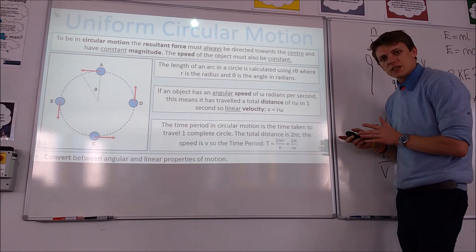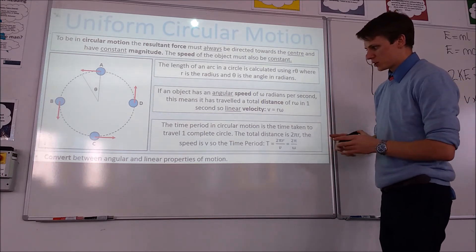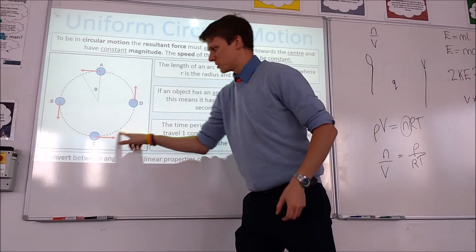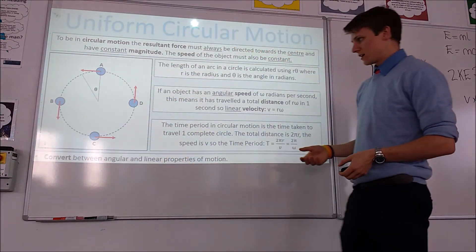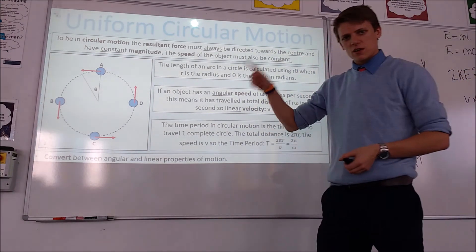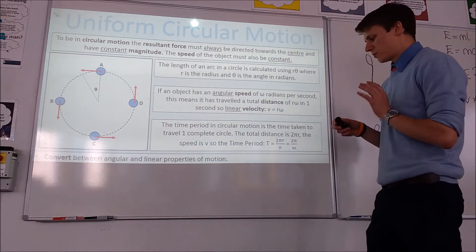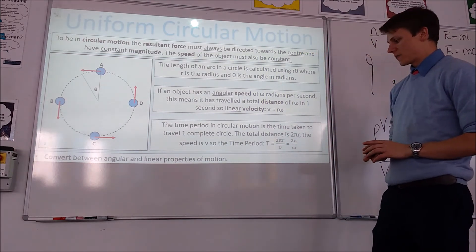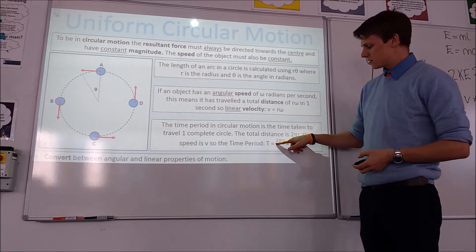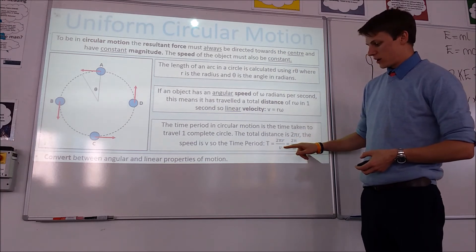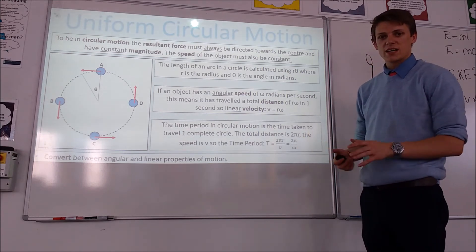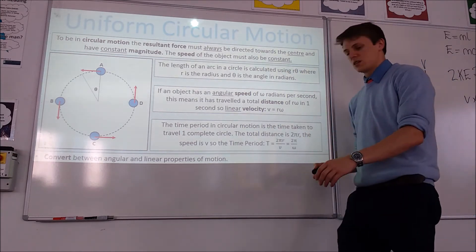Just like SHM with springs or pendulums, we have a time period — the time it takes to complete one full circle. And we have angular frequency, the number of cycles per second. We can work out the time period in terms of linear motion by taking the total distance 2πr divided by the linear velocity, or in terms of radians as 2π divided by omega. Either of those gives you the time period.